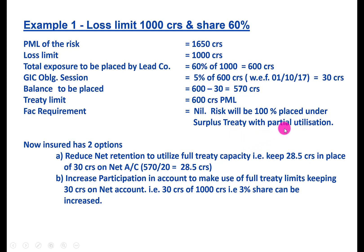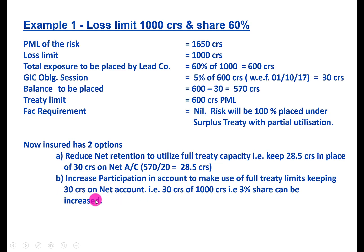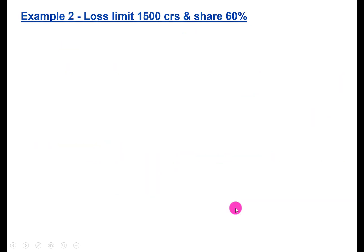Since the treaty is not fully utilized, the insurer has two options: reduce net retention from 30 to 28.5 crores to fully utilize treaty capacity, or alternatively increase participation in the account while maintaining the 30 crore retention to make full use of the treaty.